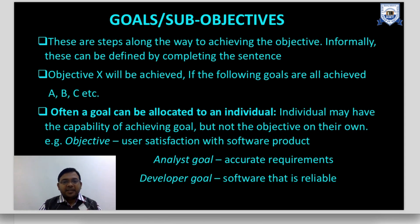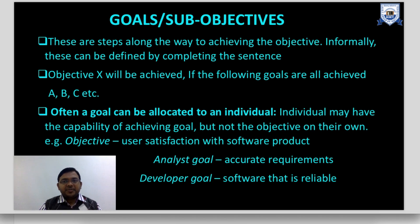Often a goal can be allocated to an individual — an individual may have the capability of achieving a goal but not the objective on their own. For example, the objective of user satisfaction with the software product: the analyst's goal is to take accurate requirements, and the developer's goal is that the software developed must be reliable. Goals and objectives should be linked — your objective should be achieved only when sub-objectives and goals are achieved.